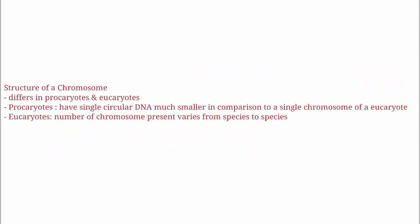The structure of a chromosome differs in prokaryotes and eukaryotes. Prokaryotes, like bacteria, do not have a membrane-bound nucleus and have a single circular DNA much smaller in comparison to a single chromosome of a eukaryote. In eukaryotes, the number of chromosomes varies from species to species.